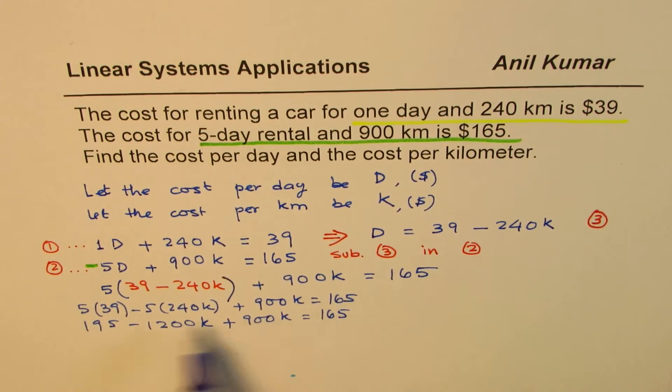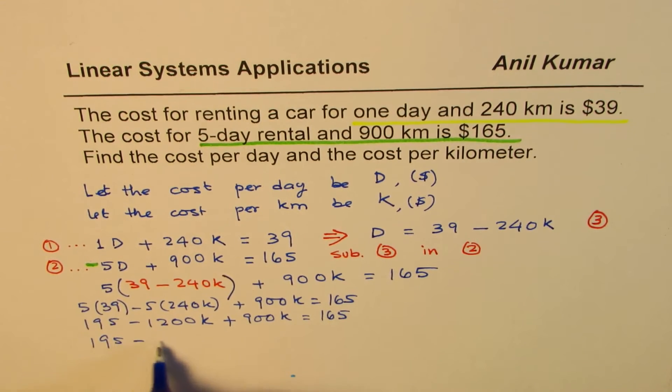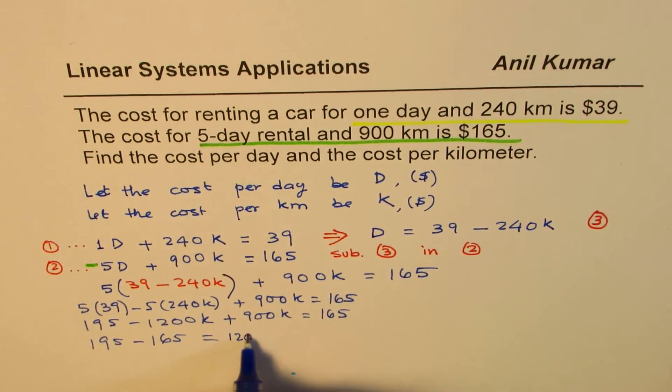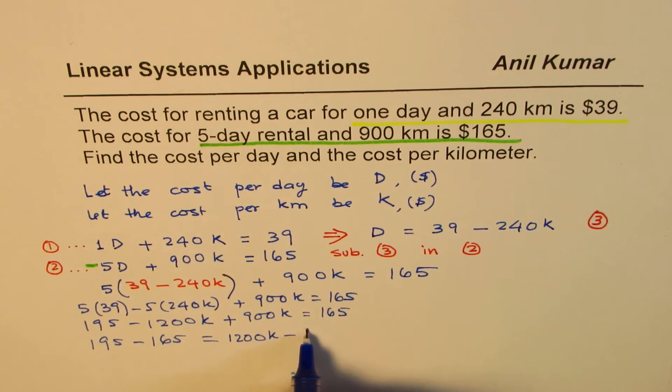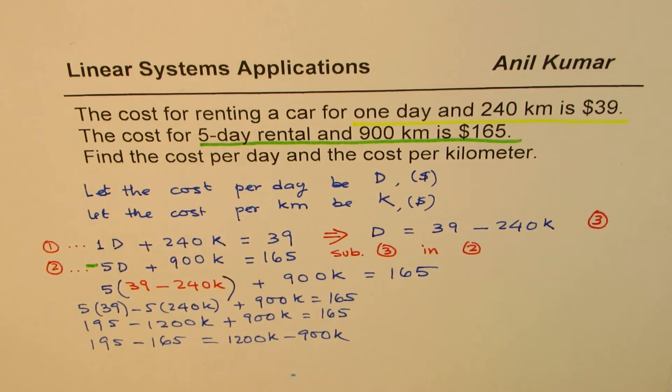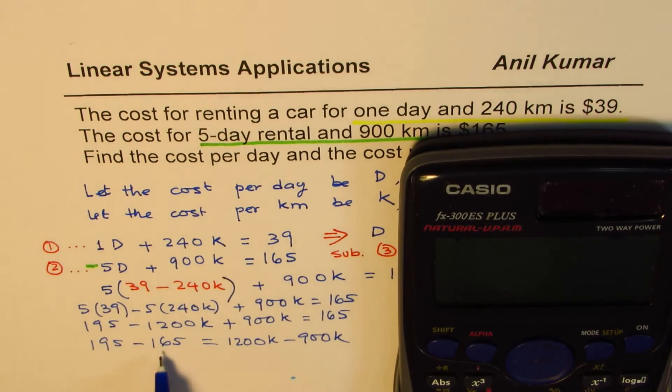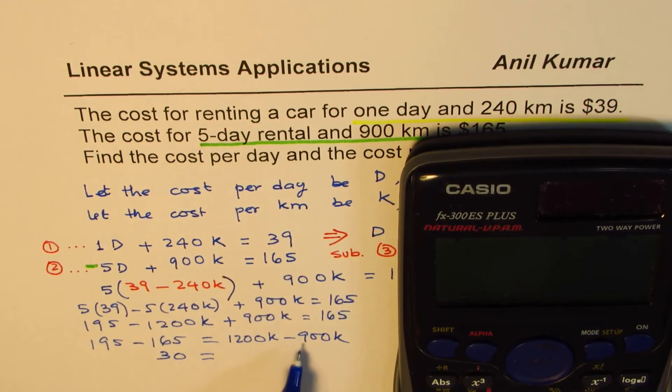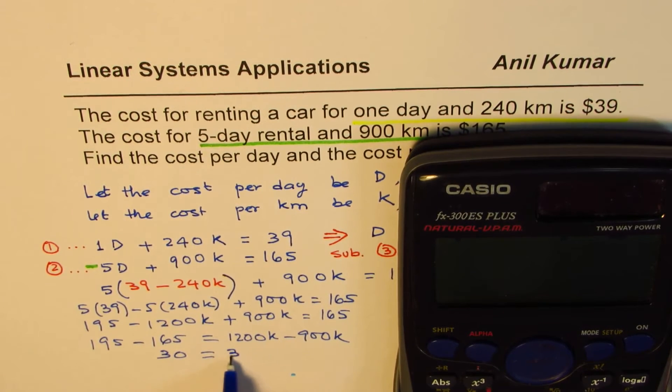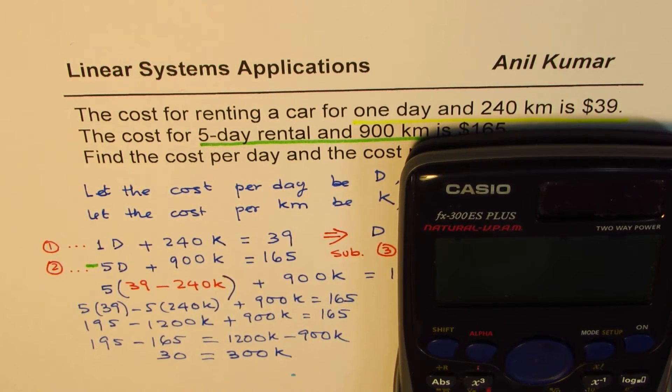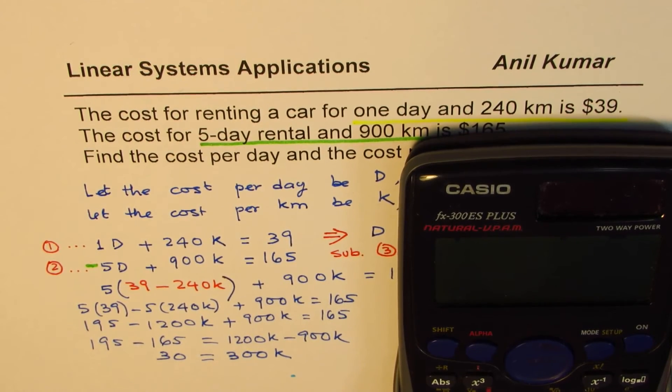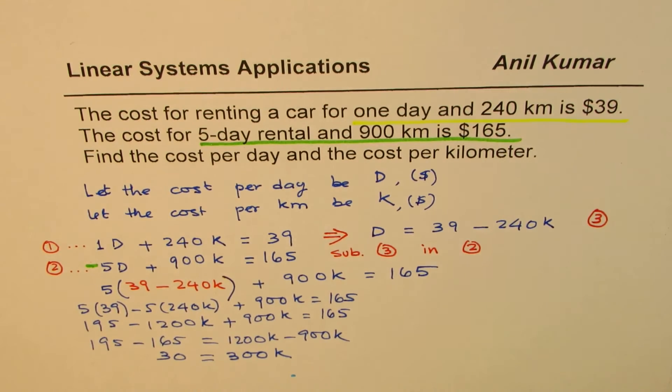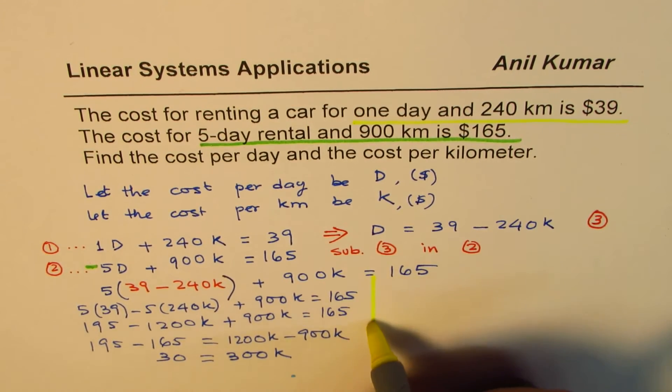Let's bring 165 to this side. So we have 195 minus 165 equals, take this to the other side, we have 1200K minus 900. Let's do our maths now. So 195 minus 165 is 30. And 1200 minus 900 is 300K. You can always use calculator. What is K? What is K now? That's simpler. So we can find K from here.